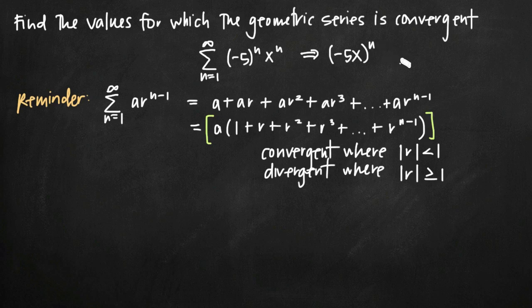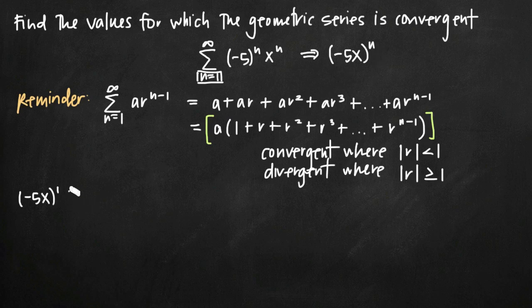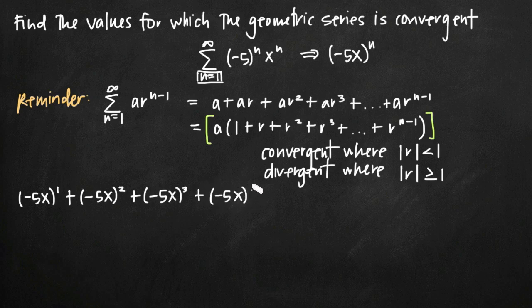Now when writing out the first several terms, we start plugging in n equals 1, n equals 2, beginning at n equals 1 because that's where the sum starts. For n equals 1 we get negative 5x to the first power, plus negative 5x squared, then negative 5x to the third, negative 5x to the fourth, and so on.